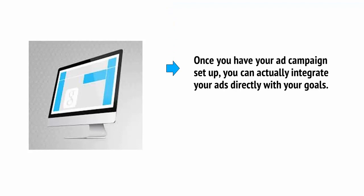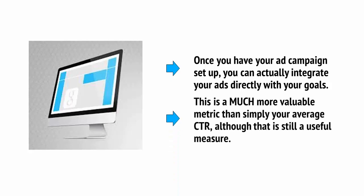You can use Bing Ads to set up goals and then see how customers are interacting with those goals. We discussed goals in an earlier video in the context of Google Analytics, and how you could use these to identify the best keywords for your ad campaigns. Once you have your ad campaign set up, you can actually integrate your ads directly with your goals. This is a much more valuable metric than simply your average CTR — your click-through rates — although that is still a useful measure.